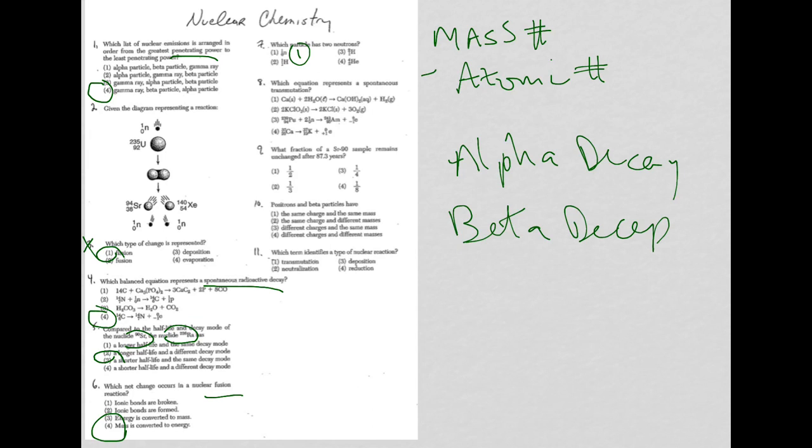We have one minus one, which is zero for choice two. For choice three, it's two minus one, which is one. Of course, it's choice four - helium, which is also two protons and two neutrons, which make up an alpha particle, or choice four.